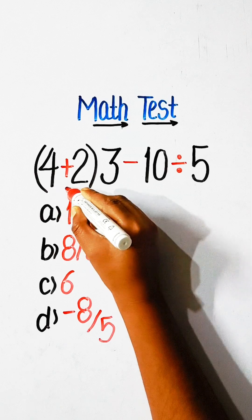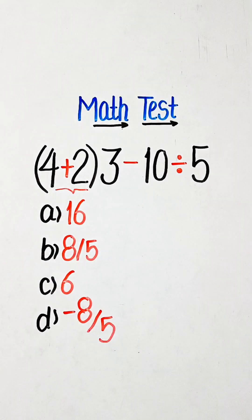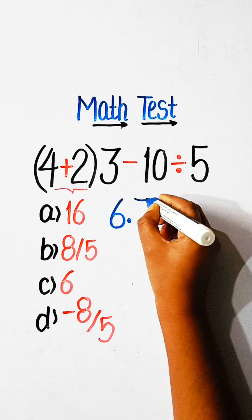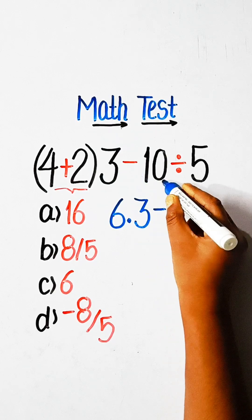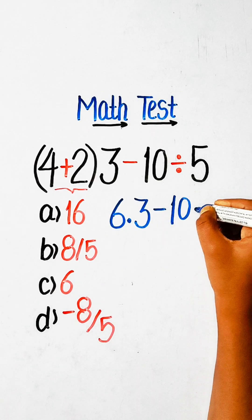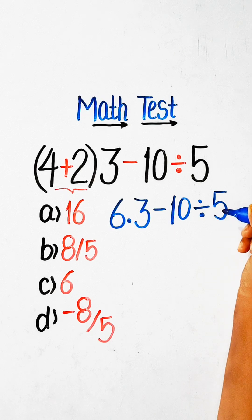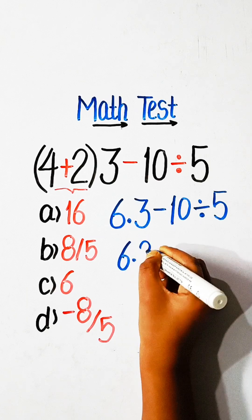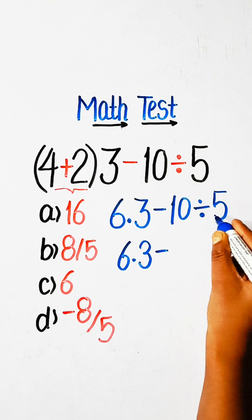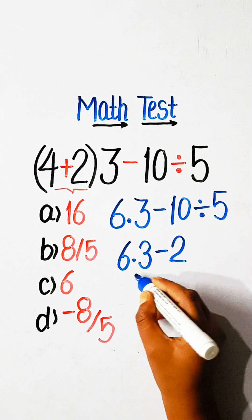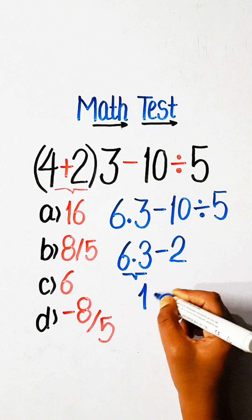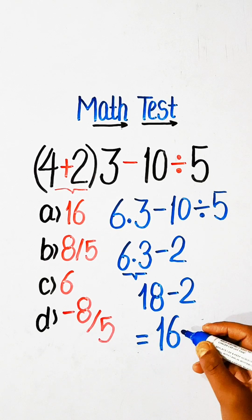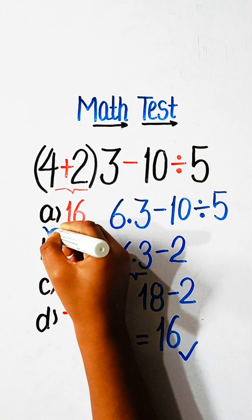Let's solve this. First of all, we have to solve the bracket part: 4 plus 2 is 6, multiply by 3, minus 10 divide by 5. So we can write 6 multiply by 3, minus 10 divide by 5, which is 2. And 6 multiply by 3 is 18, minus 2 equals 16. So 16 is our correct answer — Option A is correct.